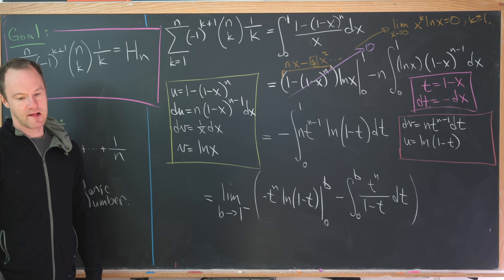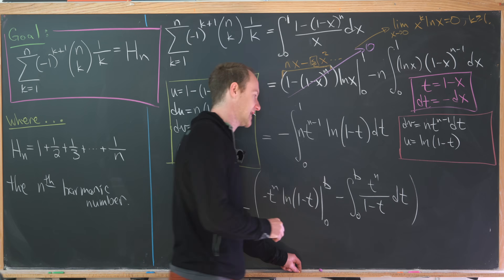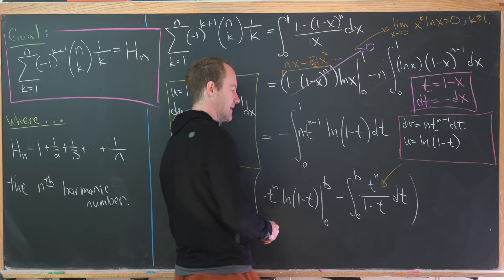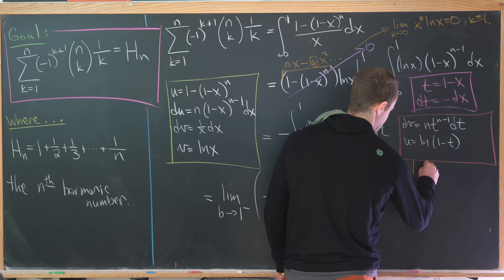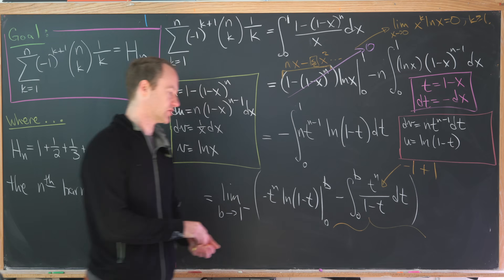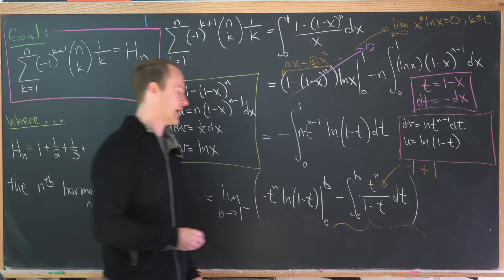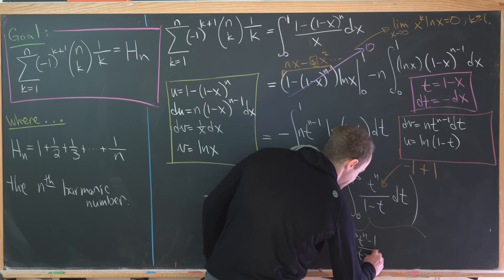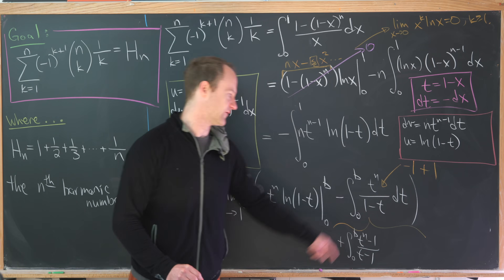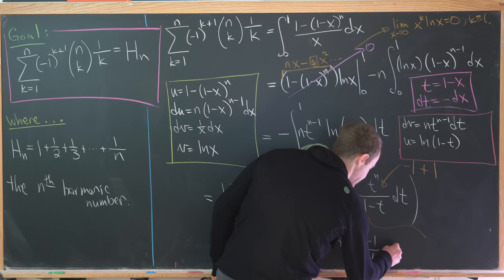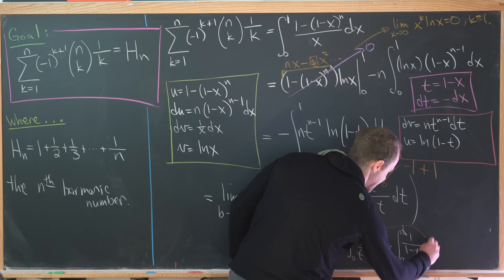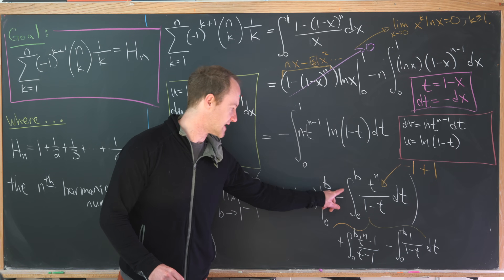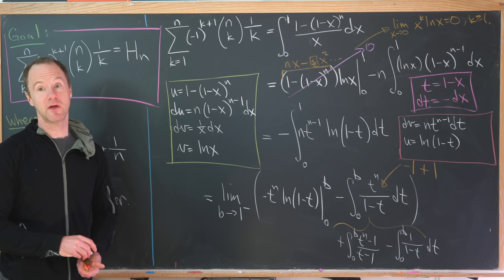We add 0 to the numerator of t^n/(1-t) by subtracting and adding 1, splitting the integrand into two pieces: plus the integral from 0 to b of (t^n - 1)/(t-1) dt, and minus the integral from 0 to b of 1/(1-t) dt. Grouping the two improper pieces together, we note (t^n-1)/(t-1) = 1 + t + t² + ... + t^(n-1) by polynomial division.